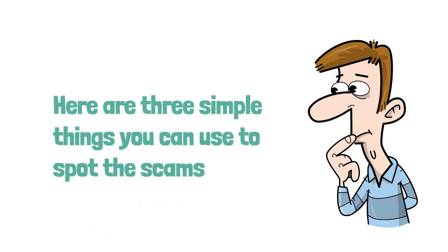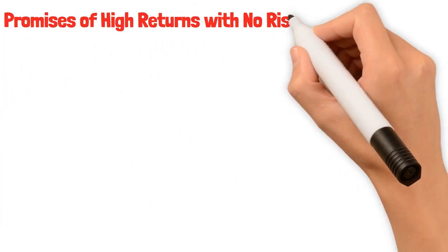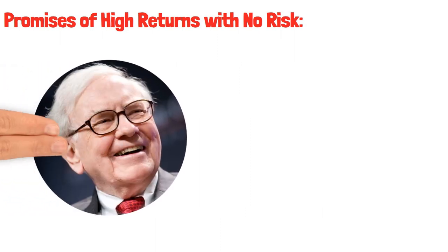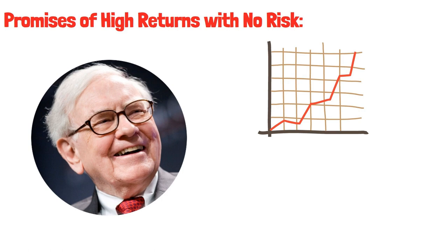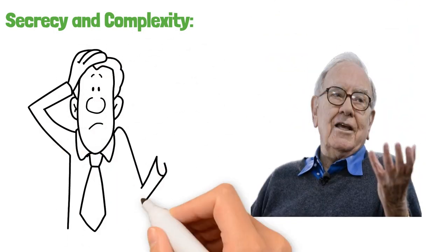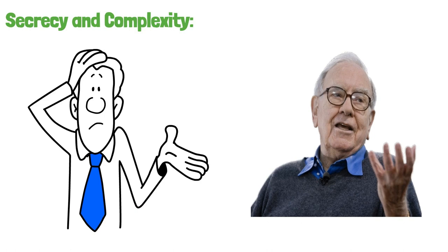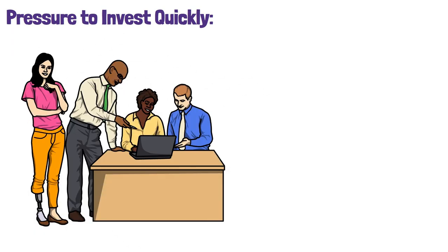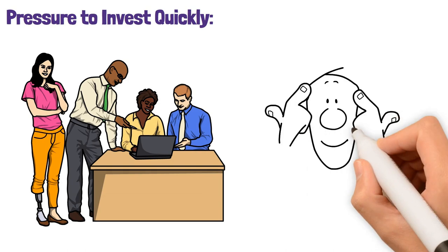Promises of high returns with no risk. Buffett says there's no such thing as a free lunch. High returns come from high risk. If they say otherwise, it's a red flag. Secrecy and complexity. Buffett loves simplicity. If you can't understand how the investment works or if it's shrouded in secrecy, that's a no-go zone. Pressure to invest quickly. Buffett takes his time. Scammers want you to hurry so you don't think. Always take a step back and think it through.